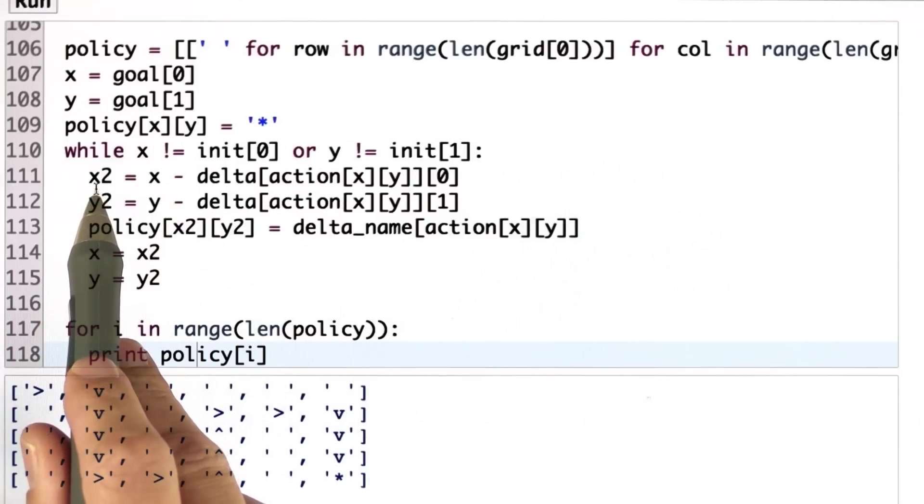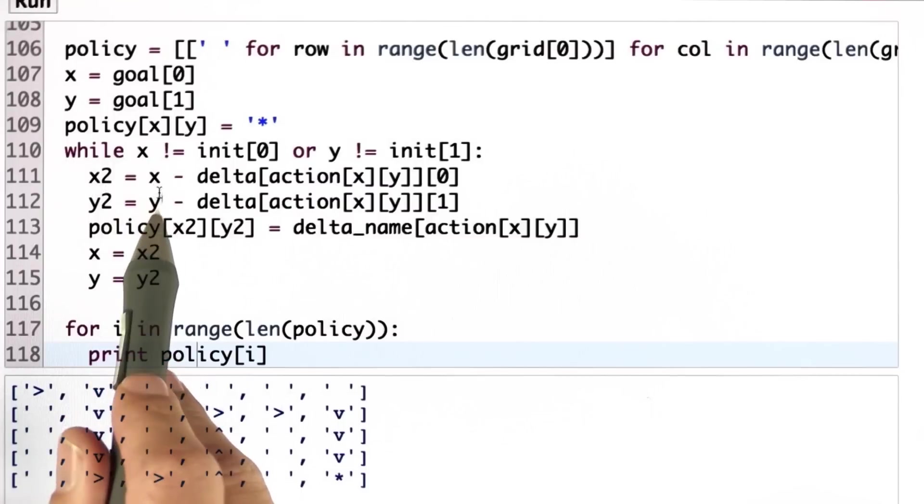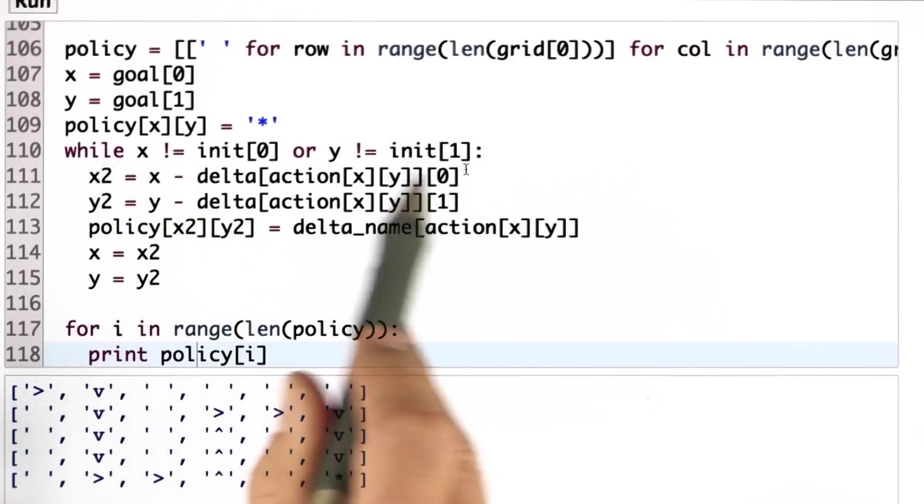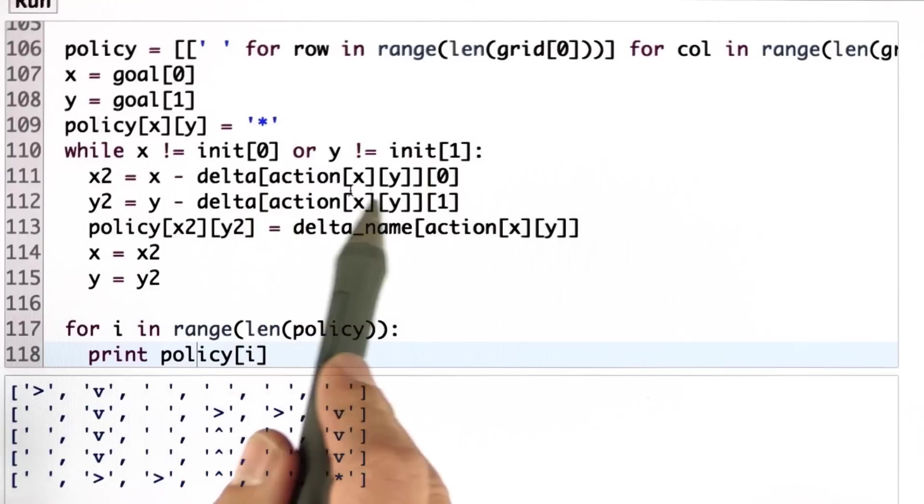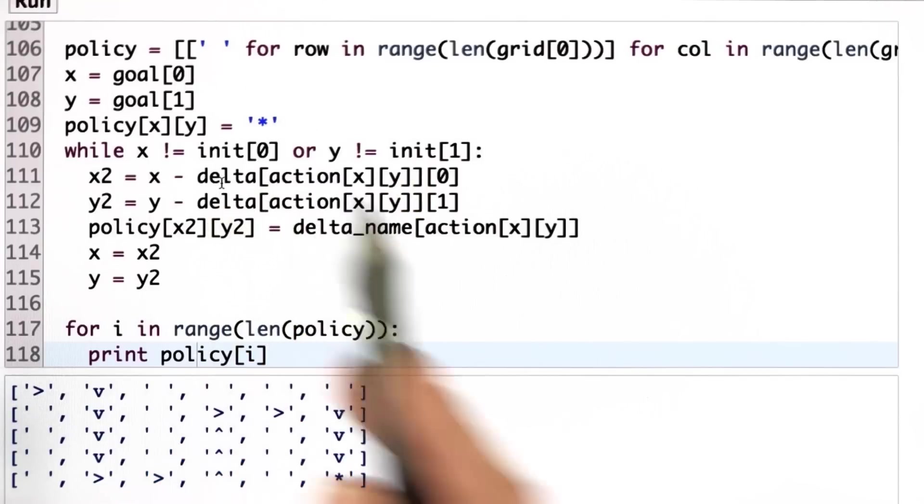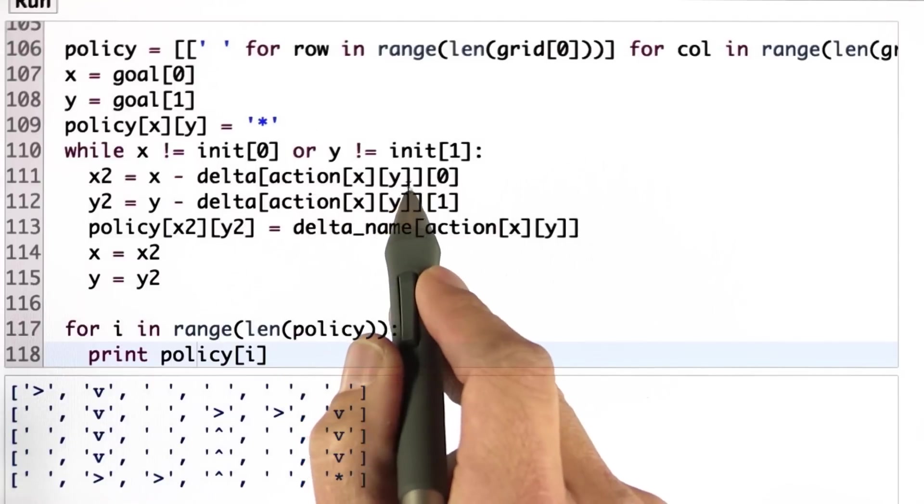So I find the originating state by taking my current state and subtracting the action, exactly the same way I added it before, using my action field as finding out what action was actually being used. In doing so, the first time I do this, x and y was the goal state, and x2, y2 become the state before. I happen to know in the goal state that the action was a down action.